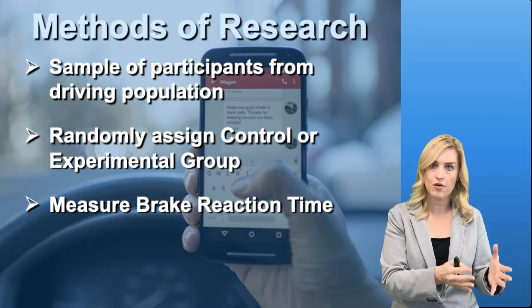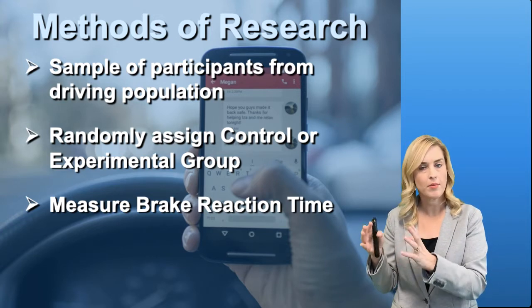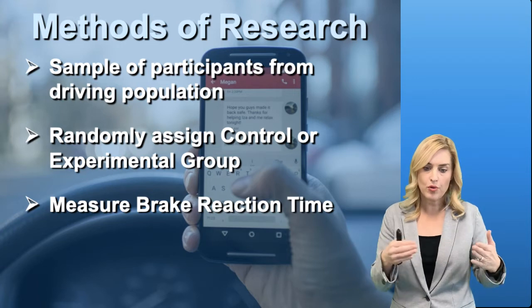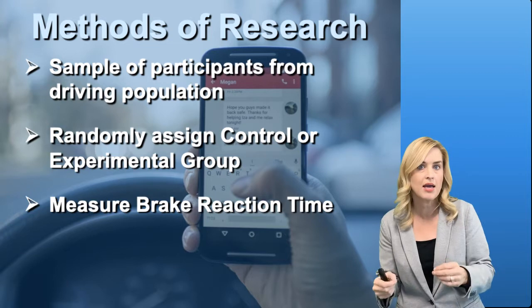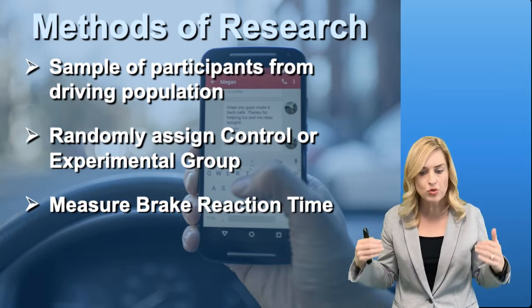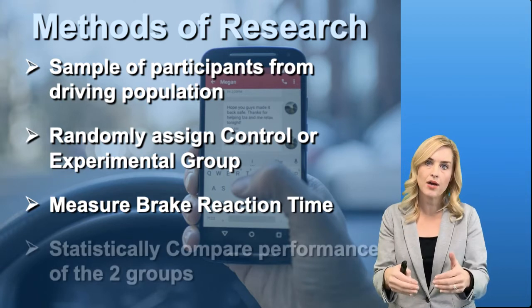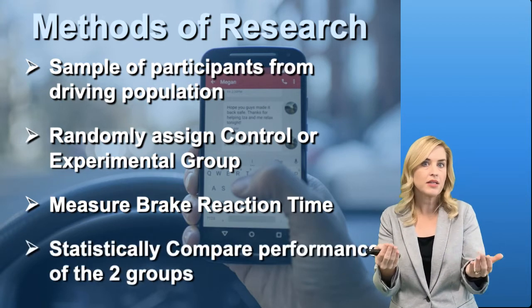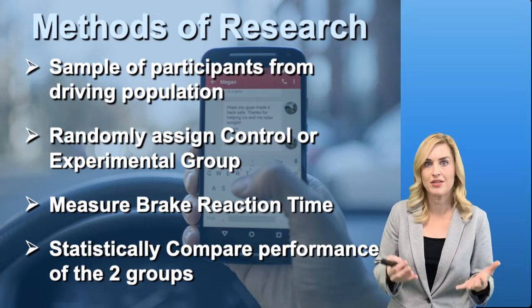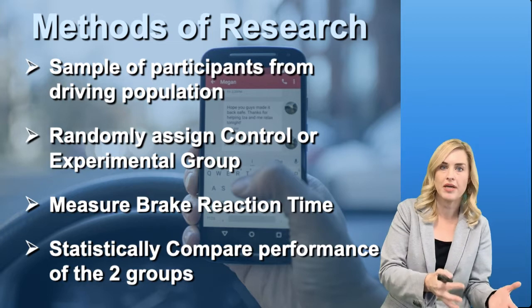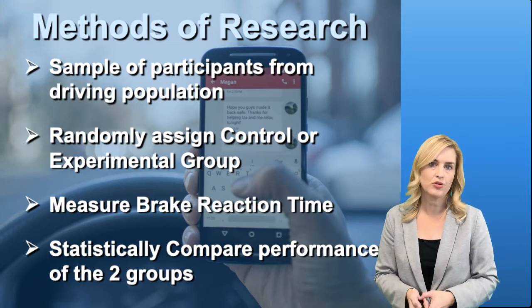One group will have a cell phone and will be texting. The other group will not have a cell phone and be driving. We will have them go through the same course and maybe put some obstacles in their way and watch what their brake reaction time is and measure that. Once we get that brake reaction time, then we can mathematically compare: is there a significant difference between these two groups? And you can imagine that, yes, in fact, there is a significant difference between people who text and drive and their brake reaction time and people who are not texting and driving while they are trying to brake.